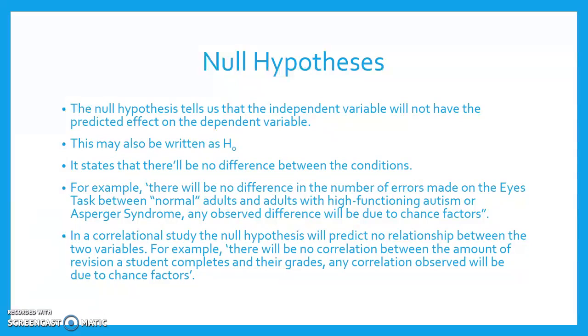In a correlational study, the null hypothesis will predict no relationship between the two variables. For example, there will be no correlation between the amount of revision a student completes and their grades. Any correlation observed will be due to chance factors.